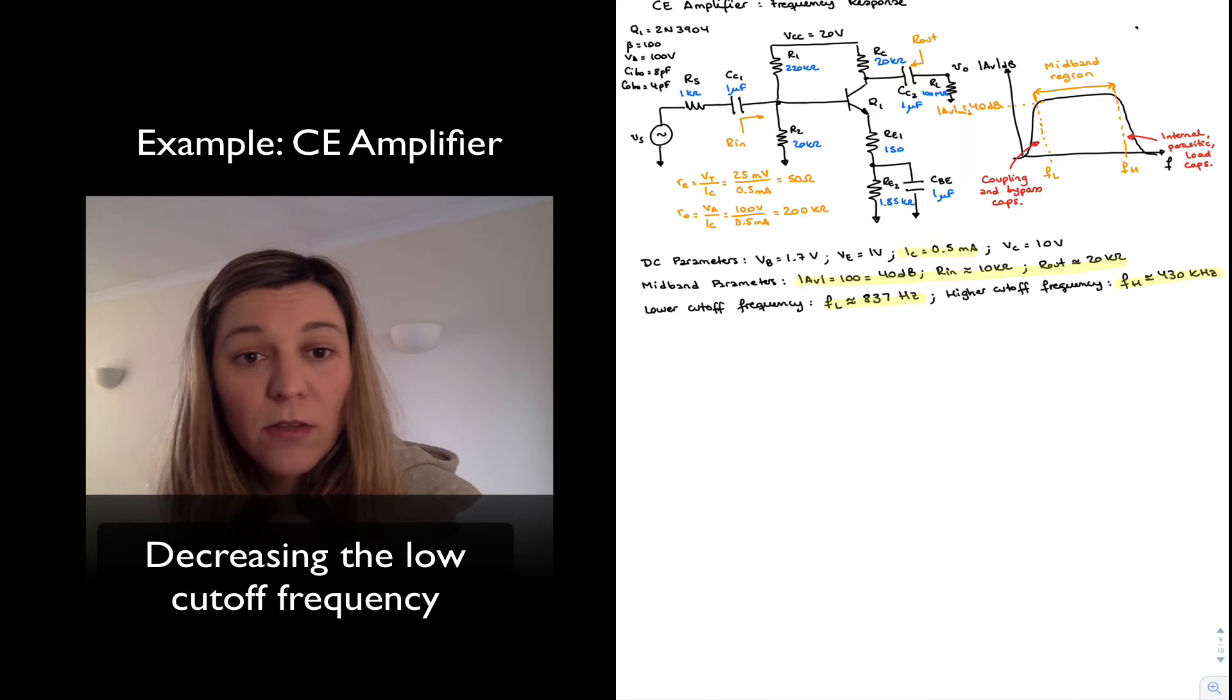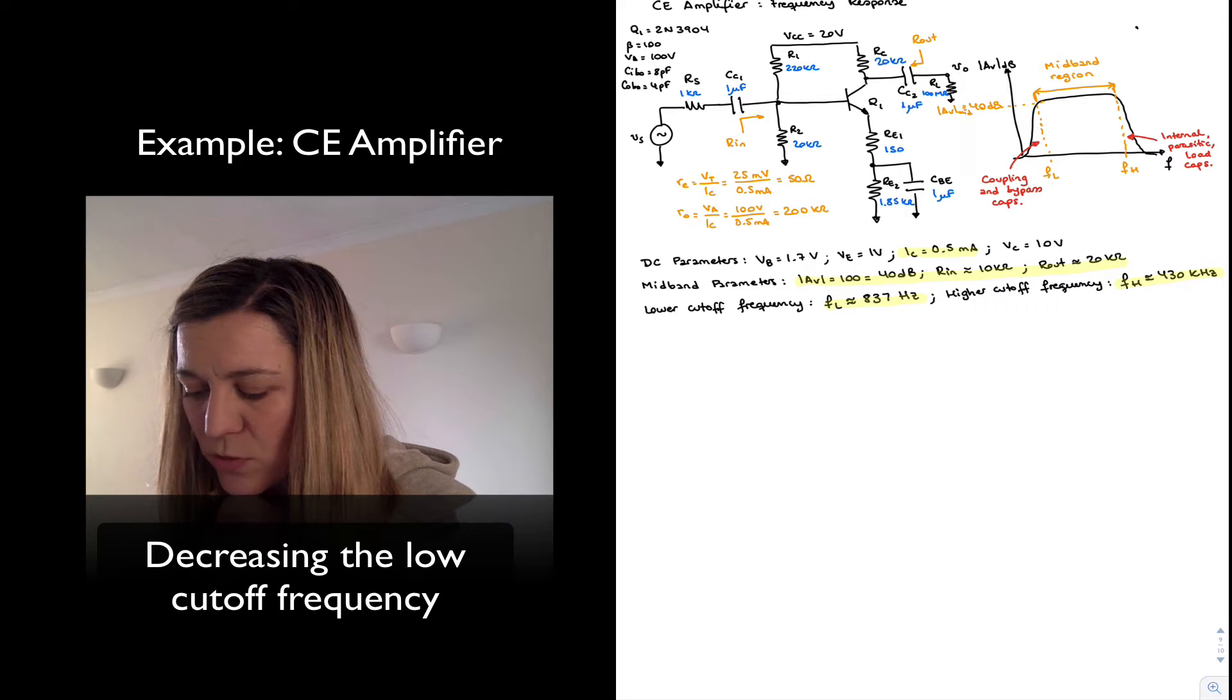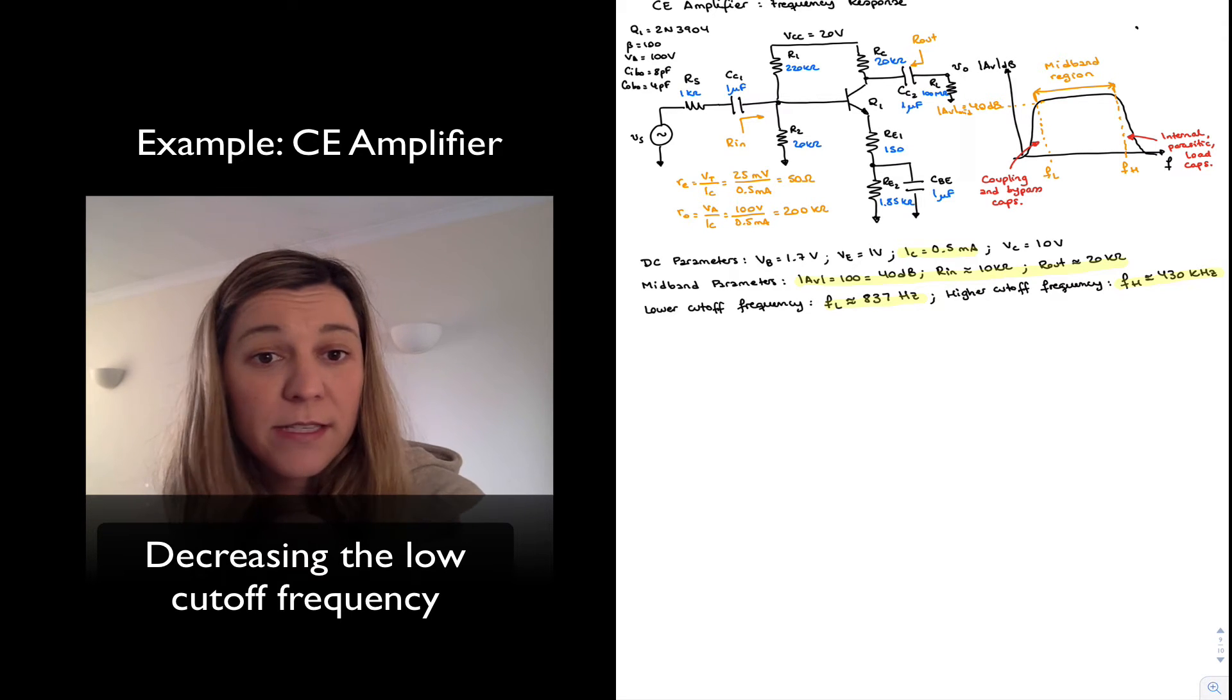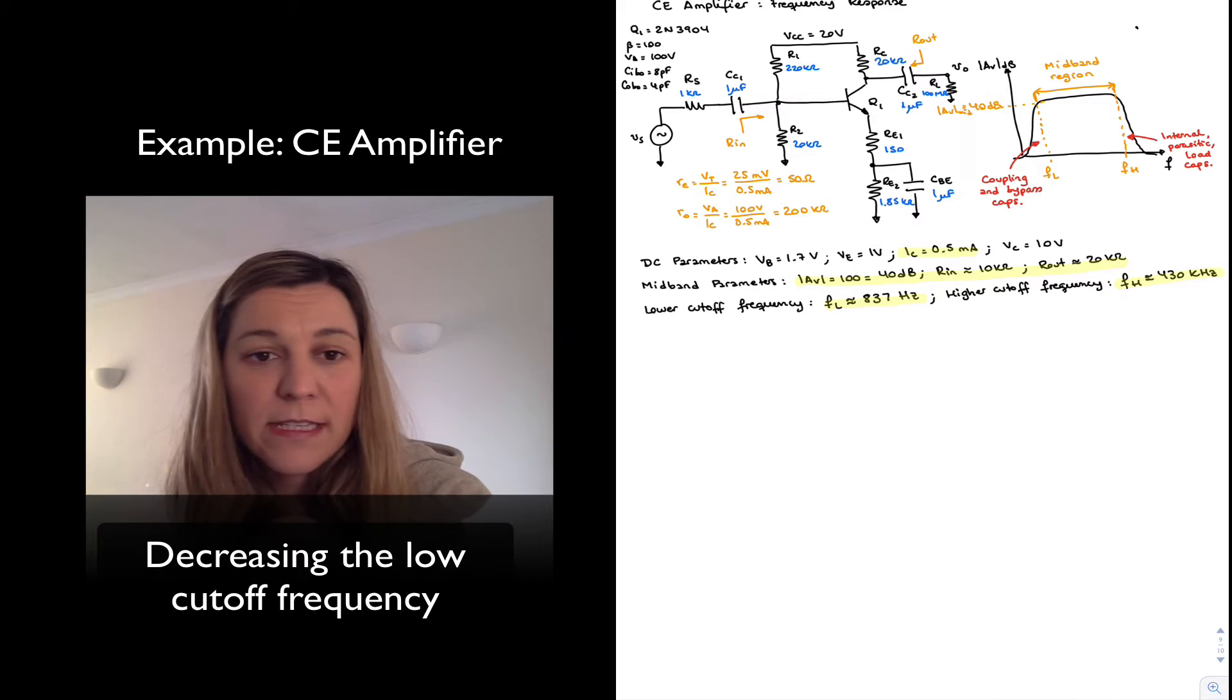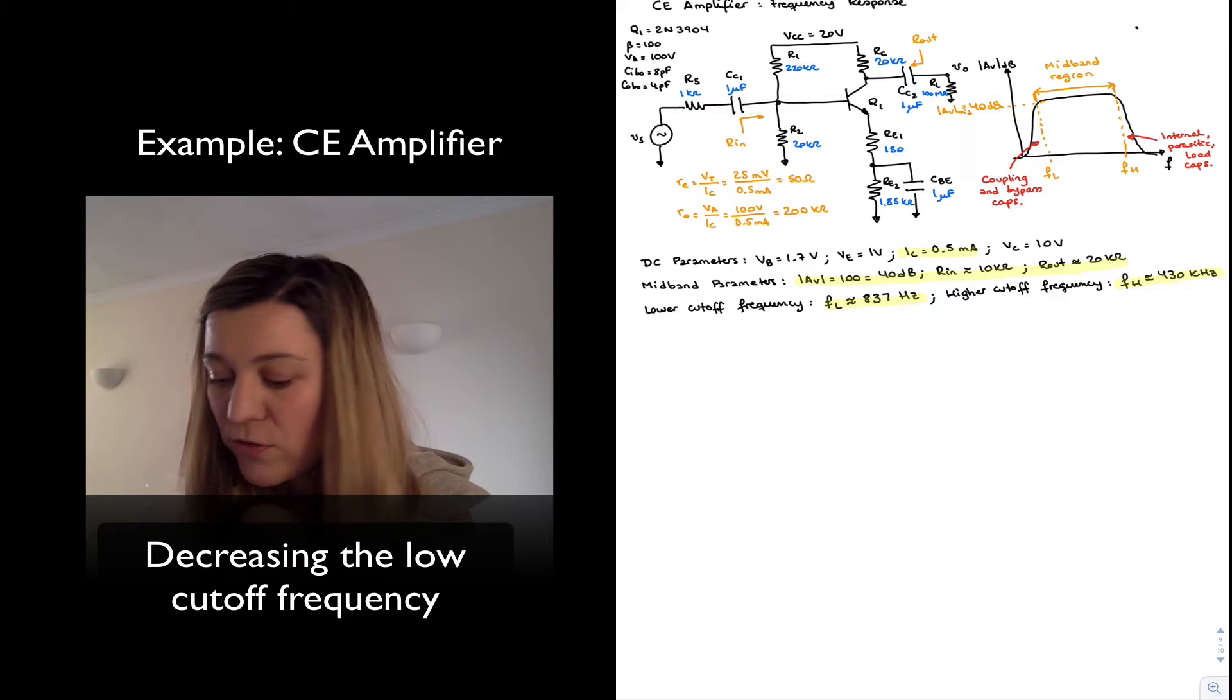We're going to start with the low cutoff frequency. We've calculated it to be around 837 Hz. And what if that was too high for us and we wanted to set it lower than that? Let's imagine we wanted to lower it by a factor of 10, or we wanted a low cutoff frequency of 83 Hz instead.